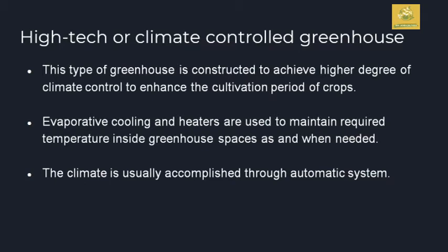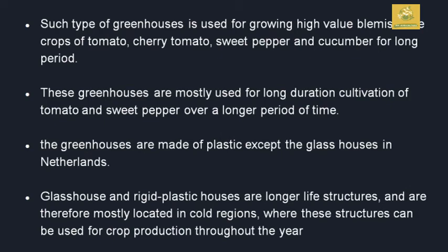Greenhouses can be classified into high-tech as well as low-tech types. In a high-tech climate-controlled greenhouse, you can control each and every environmental need of the plant for the particular cultivation period of the crop. Evaporative cooling and heaters are used to maintain the required temperature inside the greenhouse space, and these are altered as needed. Climate control is usually accomplished through an automatic system present in high-tech greenhouses. Such greenhouses are usually used for growing high-value blemish-free crops like tomato, cherry tomatoes, sweet pepper, and cucumber for a long period, providing a particularly suitable environment for the crop to grow. These greenhouses are mainly used for long-duration tomato and sweet pepper cultivation over a period of time.